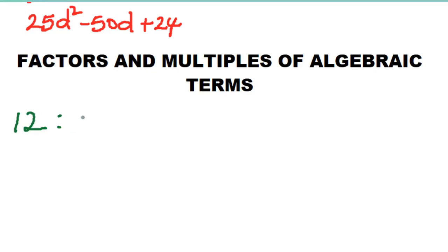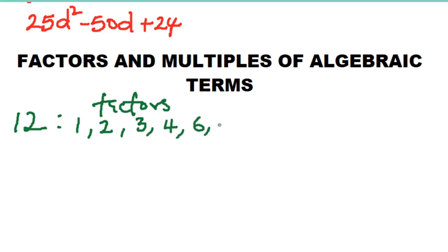What are the factors of 12? They are the numbers that can divide 12 without remainder: 1 divides 12 to give 12; 2 divides to give 6; 3 divides to give 4; 4 divides to give 3; 6 divides to give 2; and 12 divides itself to give 1. These are the factors of 12, and 12 is the multiple of all these numbers.